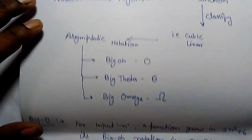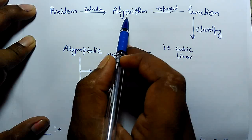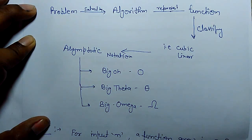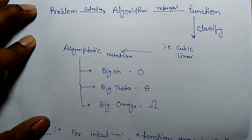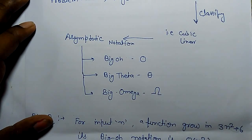How do we represent time complexity? If there is a problem solved by a particular algorithm, we represent it as a function. This function can be classified in several ways — cubic, linear, quadratic — and these functions can be represented in asymptotic notation in the most concise form. Three types of asymptotic notations are used: Big O, Big Theta, and Big Omega. Most frequently we use these notations, and now we are going to learn Big O notation.